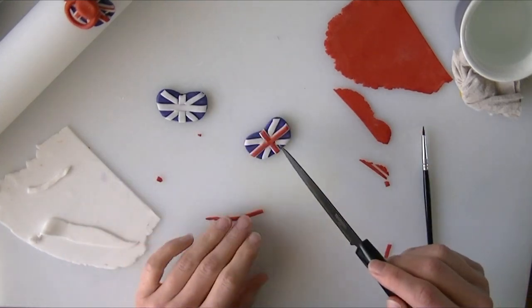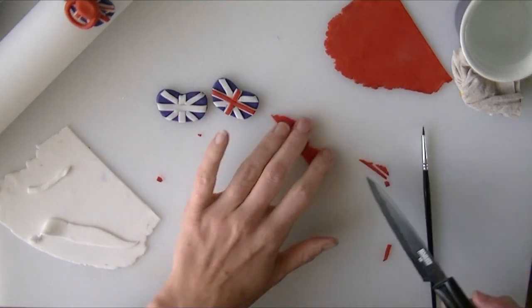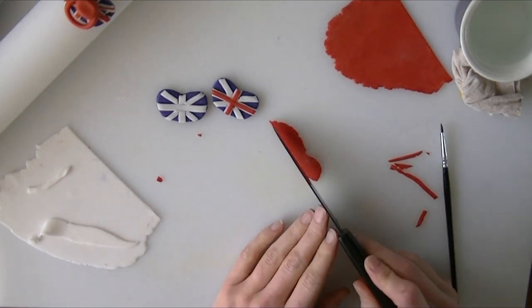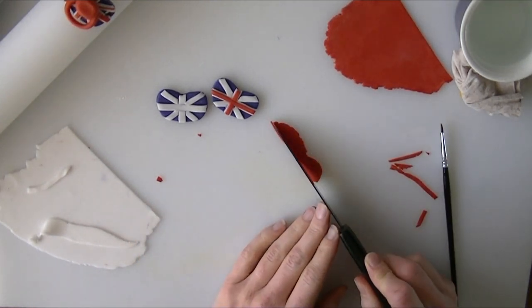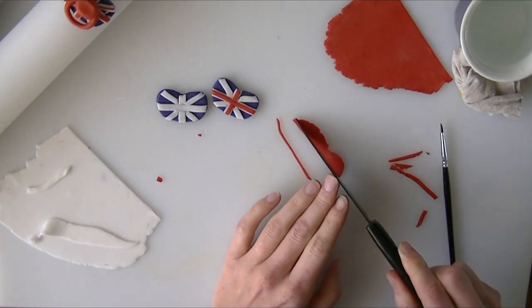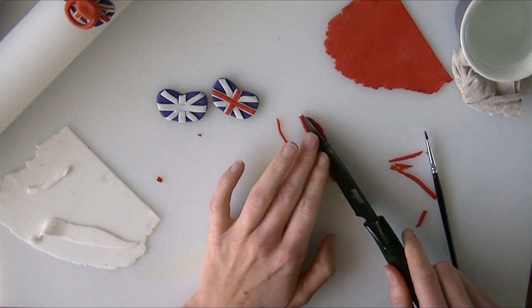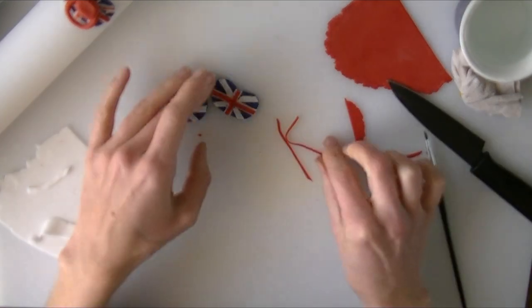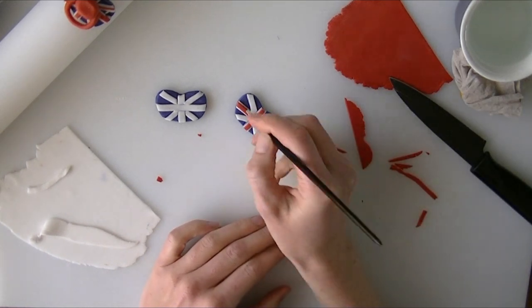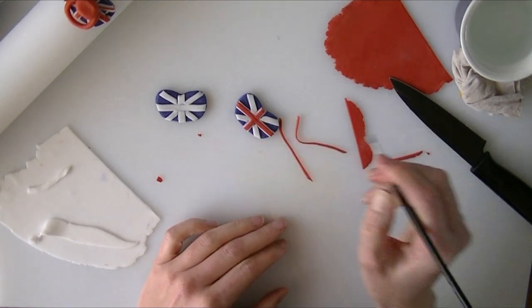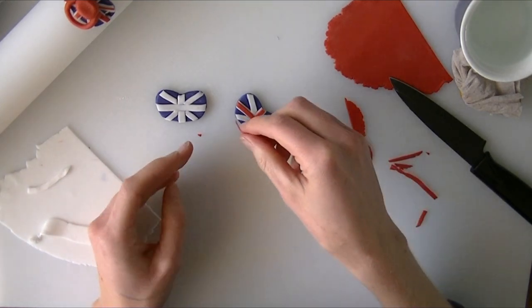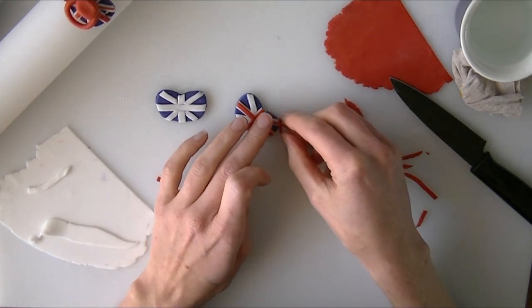Now for our bits that go across the other way, we're going to try and cut the red a little bit finer if we can. Again, putting a little bit of water on so that it sticks in place. Just going to lay that across there.